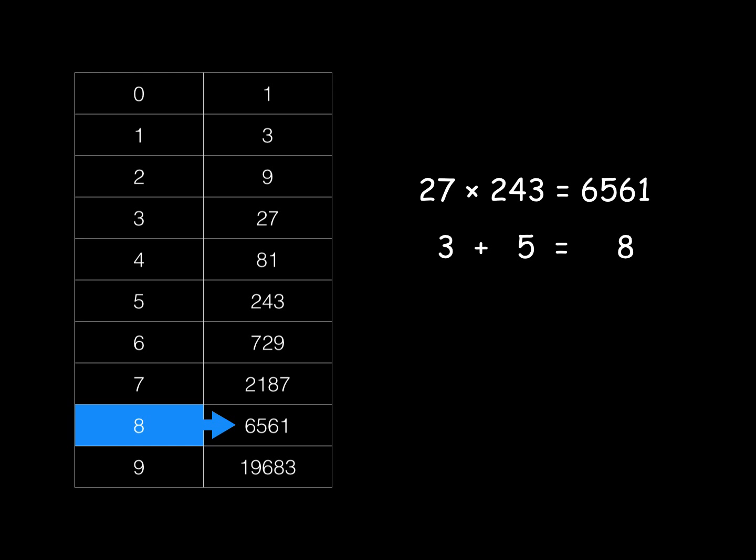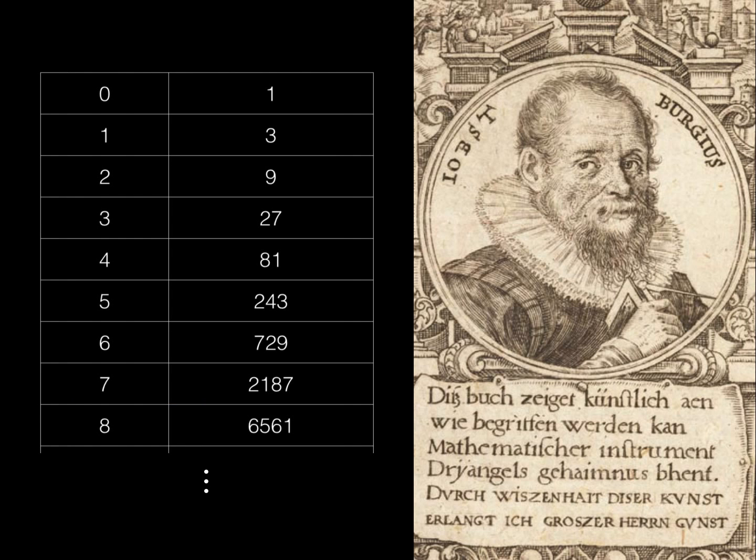They had tables like this in the 1500s. This was a table for the base 3, but they made them for other numbers too. They're not so useful since you can only multiply certain specific numbers with them. This is where our friend Yost comes in.